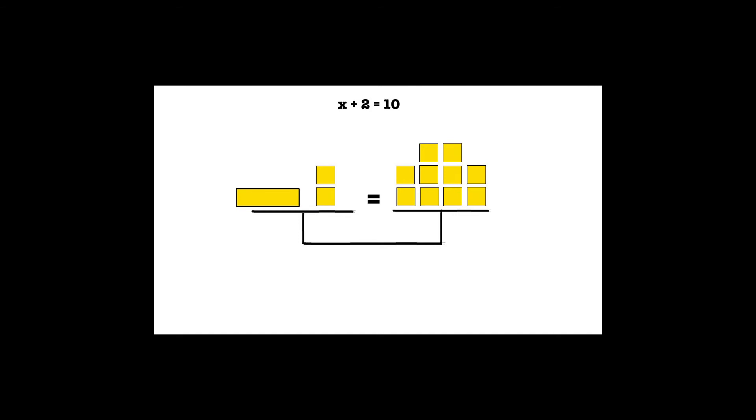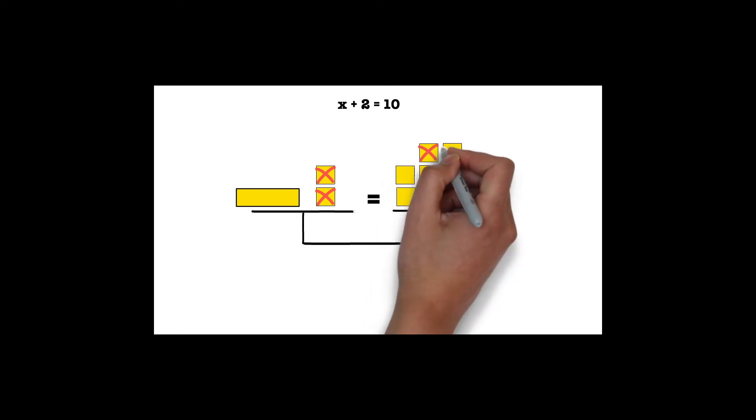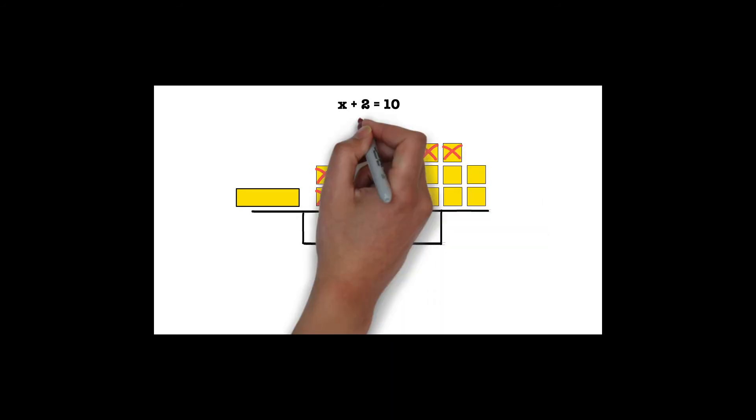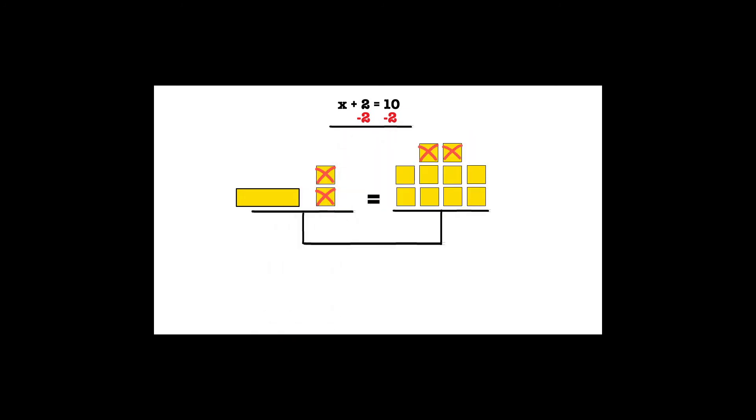Notice that the left side has a rectangle and two squares. If we remove the two squares on the left side, only the rectangle will remain. Remember, what we do to one side, we have to do to the other, so we must remove two squares on the right side, too. After removing the two squares on each side, we are left with one rectangle equaling eight squares.